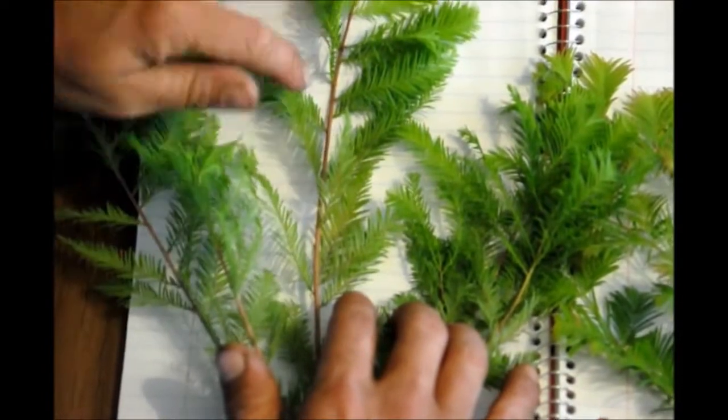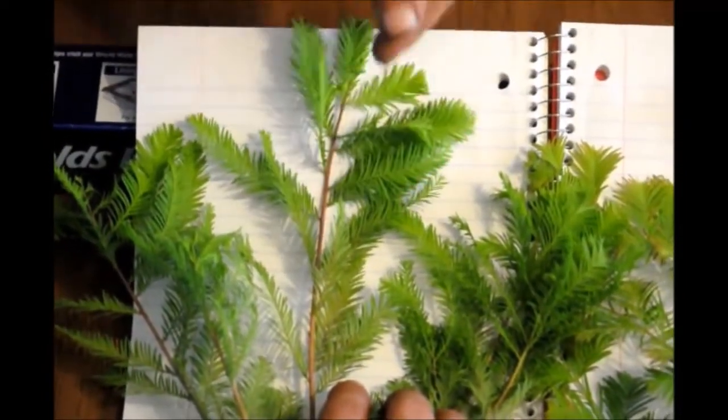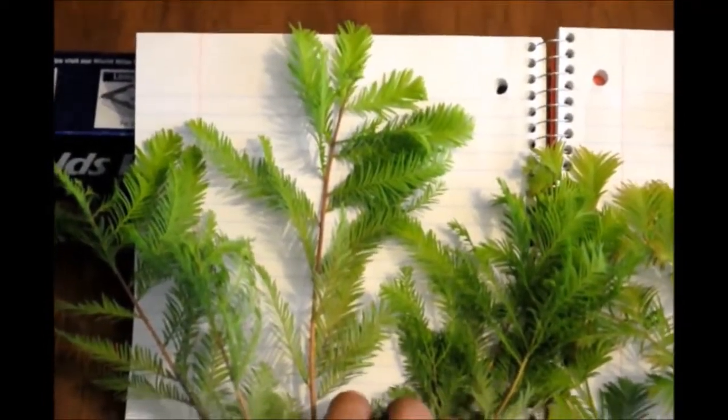So there's a leaf here, and directly on the opposite side there is no leaf, but up a little bit there's another leaf. So they alternate as they go up the branch.